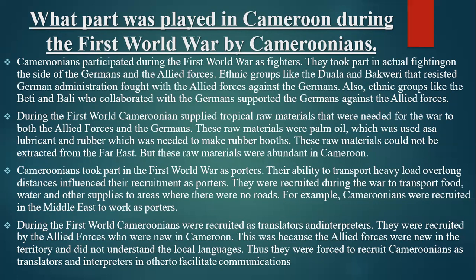During the First World War, Cameroonians supplied tropical raw materials needed for the war to both the Allied forces and the Germans. These raw materials included palm oil, which was used as a lubricant, and rubber, which was needed to make rubber boots. These raw materials could not be easily extracted from the Far East, but were abundant in Cameroon.